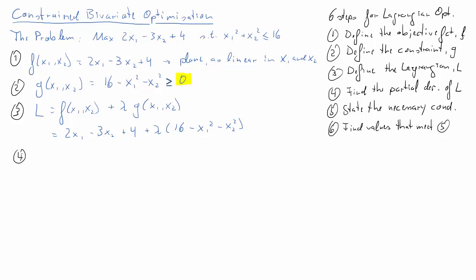Step number 4: we find the partial derivatives of our Lagrangian function — the first order partial derivative with respect to x₁ and with respect to x₂. In our Lagrangian, x₁ appears twice; the lambda term has a minus sign, giving us 2 minus 2λx₁. For the partial derivative with respect to x₂, we get negative 3 minus 2λx₂. Those are our two partial derivatives.